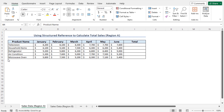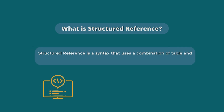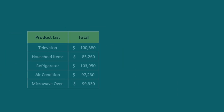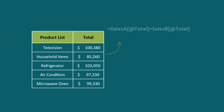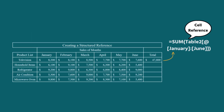For this video, I will use Microsoft Excel 365. Let's quickly refresh our idea about the structured reference. A structured reference is a syntax that uses a combination of table and column names as cell references. This is a built-in feature of Excel. After inserting a table, Excel will automatically display structured references in a cell if you are using a cell reference that is related to a table. This helps us understand formulas quickly and simply.